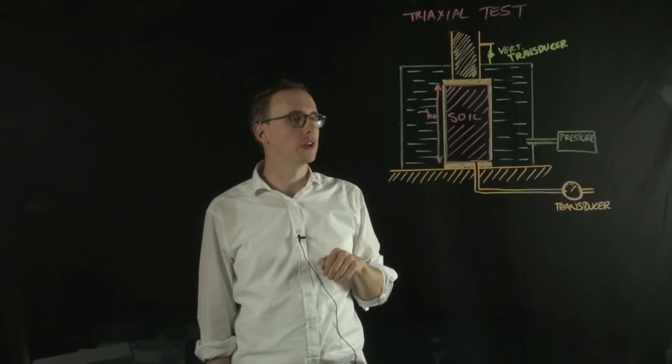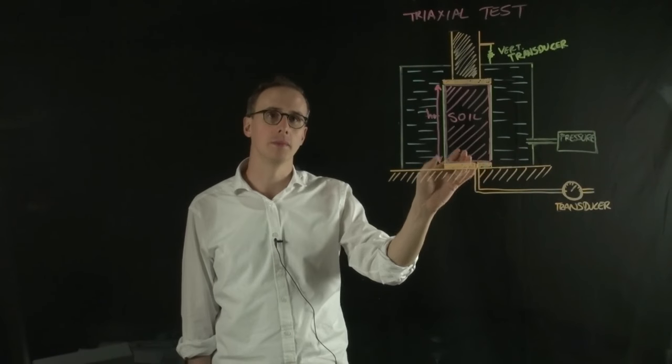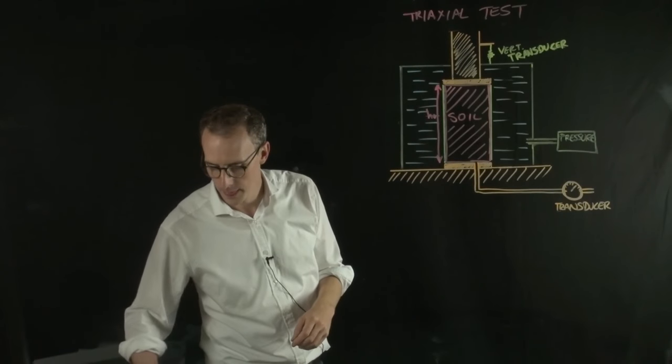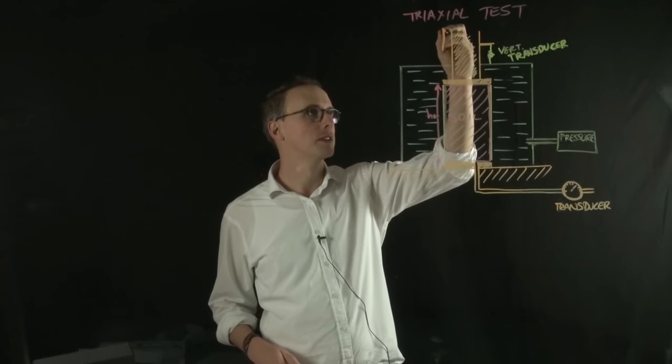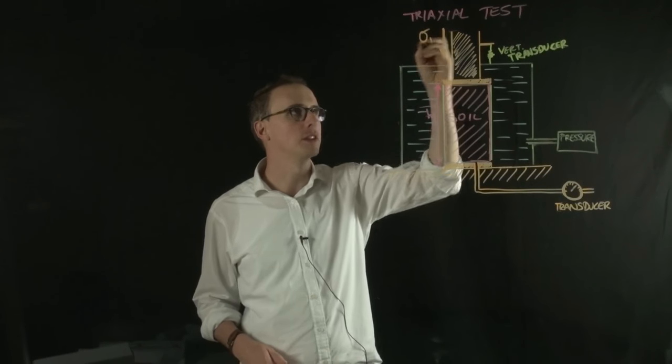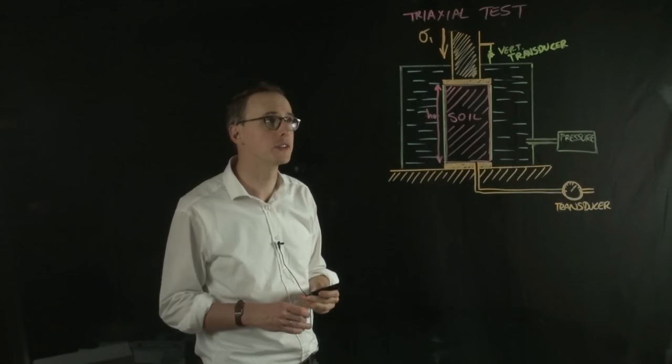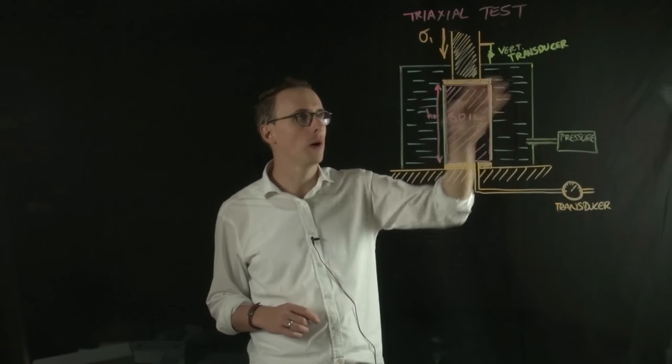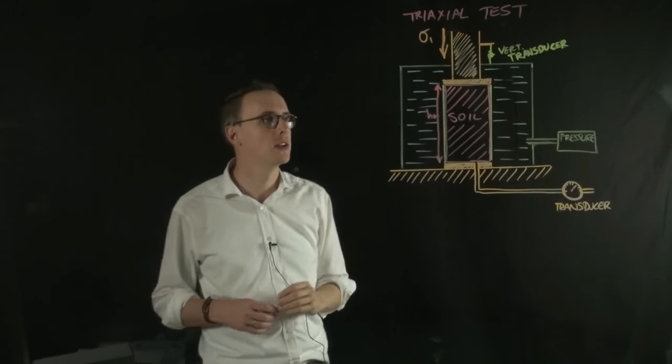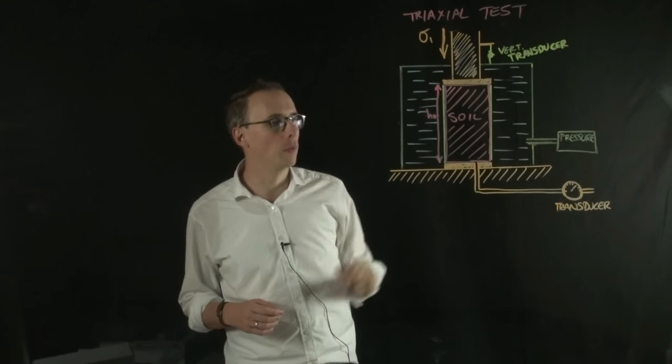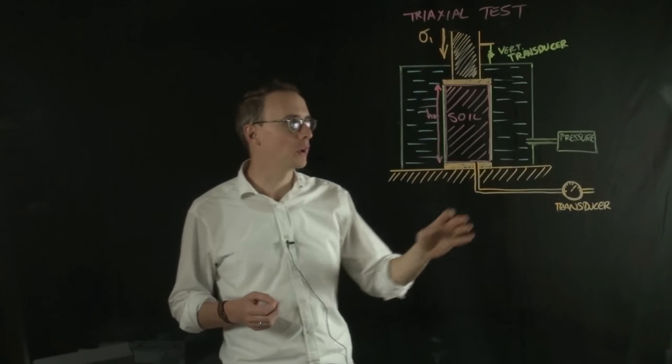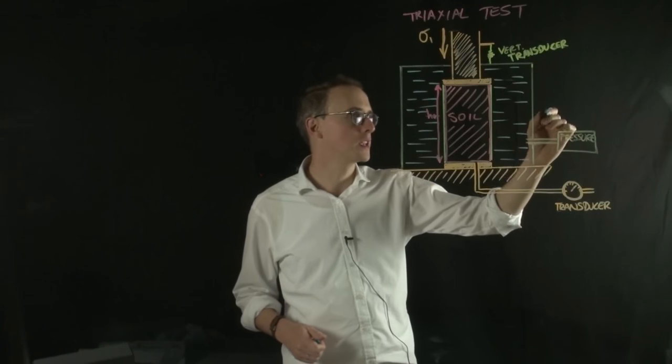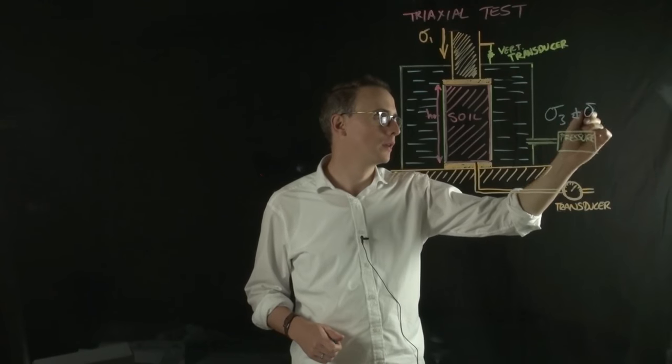The soil is supported on a base, and on top of that soil, we can apply an axial load. That's usually the net maximum principal stress during the test. The minor stresses are controlled using a water pressure cell around the outside of the soil sample, and that gives us our sigma-3 and sigma-2 stresses.